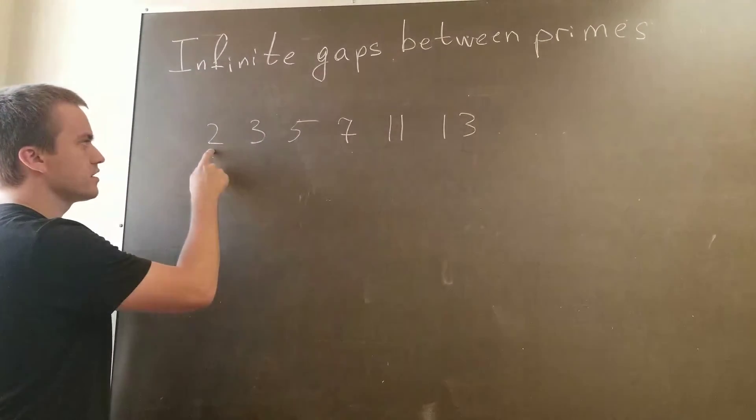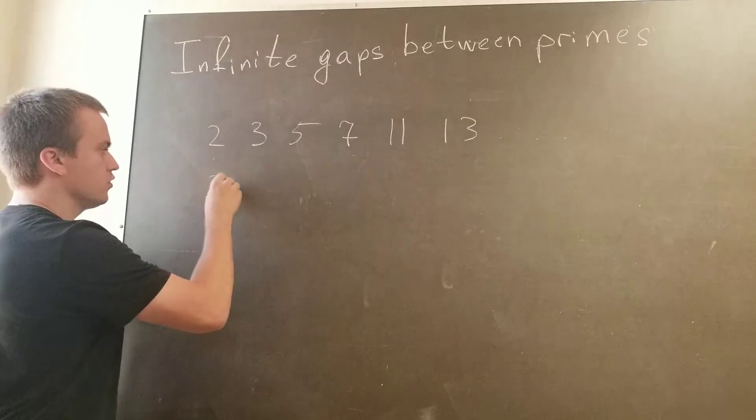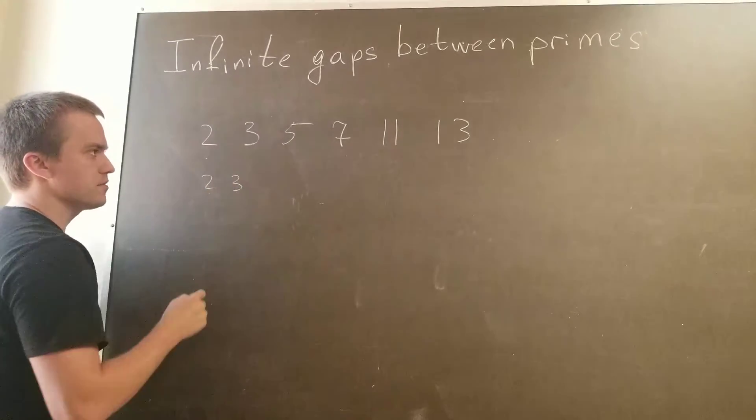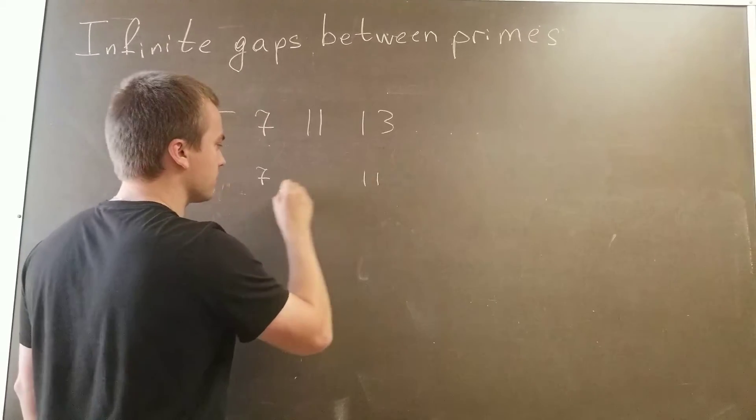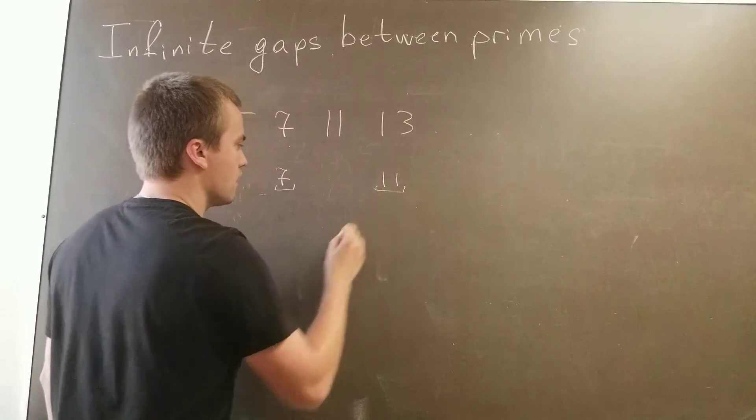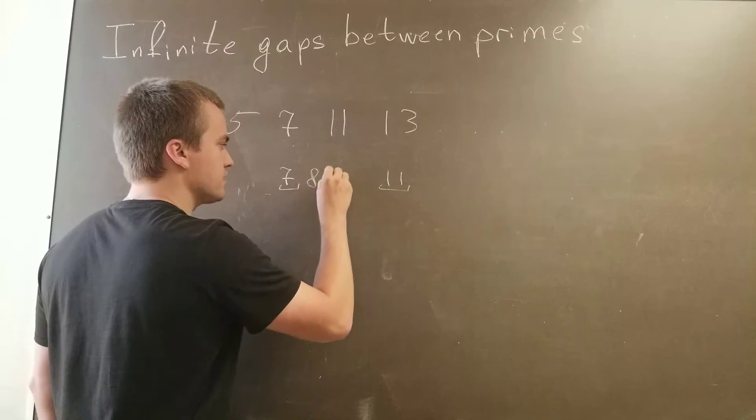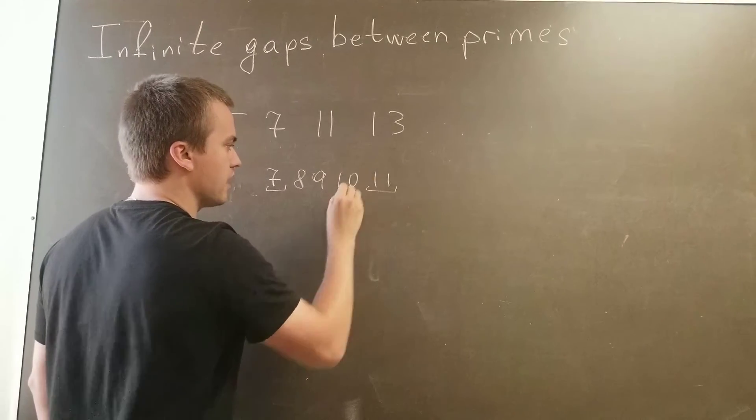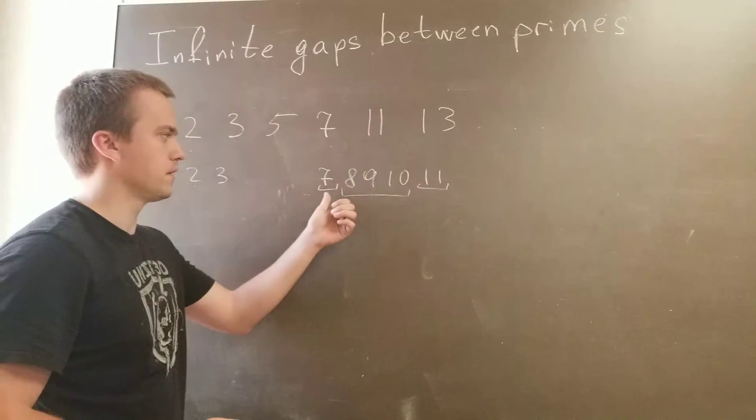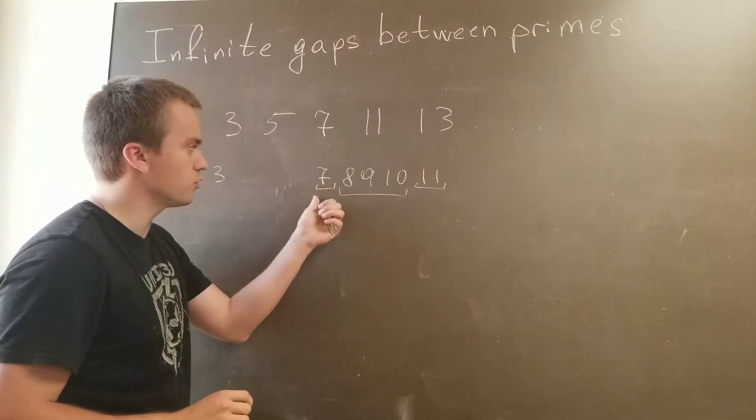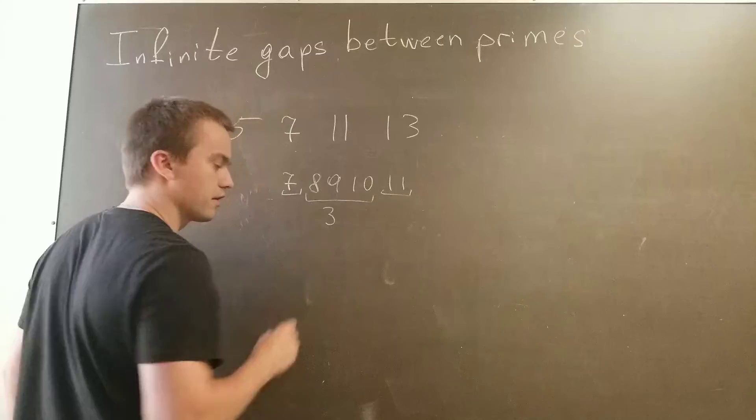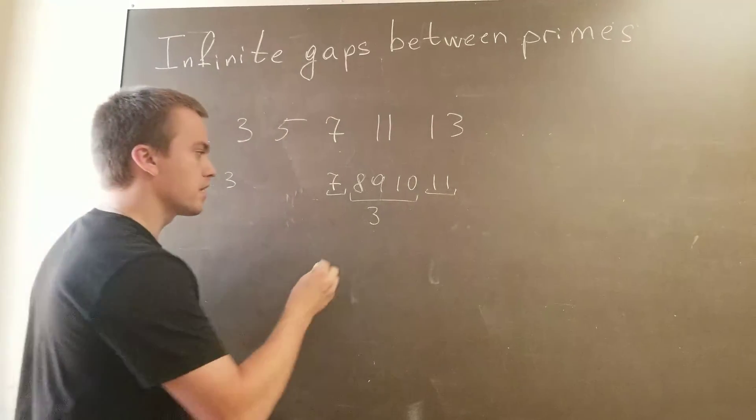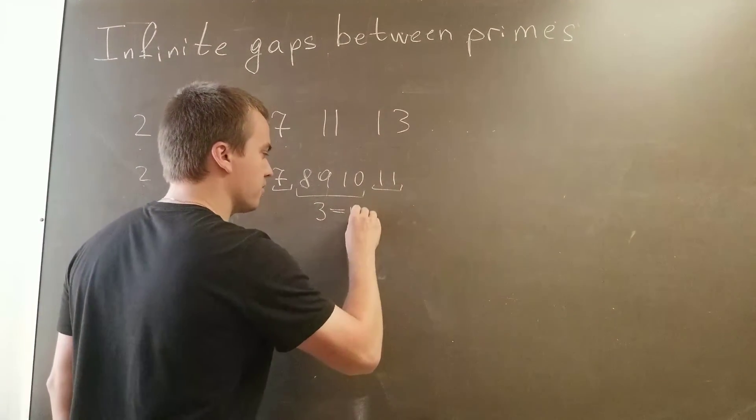You can see there is no gap between 2 and 3, they are two consecutive primes. For example, if I take 7 and 11, you can see between them is 8, 9, 10. So the gap between two primes 7 and 11 is equal to 3. And let's call this 3 to be some variable n.